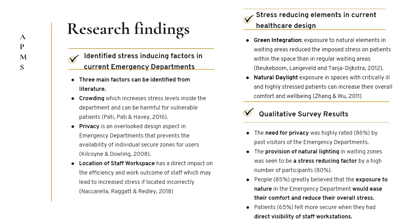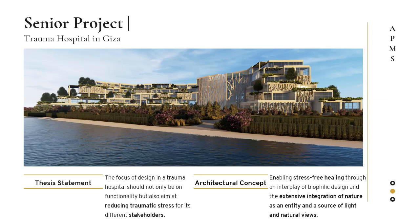Three main research findings were determined. The first was the identification of stress-inducing factors in emergency departments, including crowding, privacy issues, and the incorrect location of staff workspaces. The second was the classification of stress-reducing design elements used in current healthcare facilities, namely the integration of nature and the increase of natural daylight exposure. The third finding came from the qualitative survey, which defined current issues previous visitors had in the emergency department. Previous research findings were used to regenerate the design of a trauma hospital, transferring it from a stress-inducing setting to one that focuses on reducing the overall traumatic stress of its stakeholders.